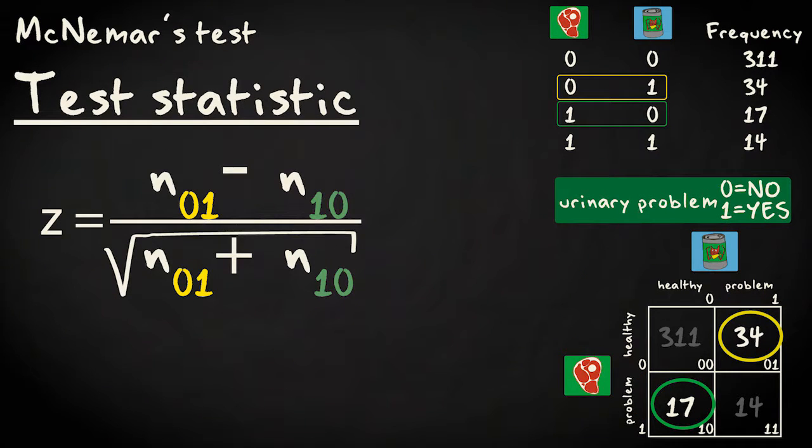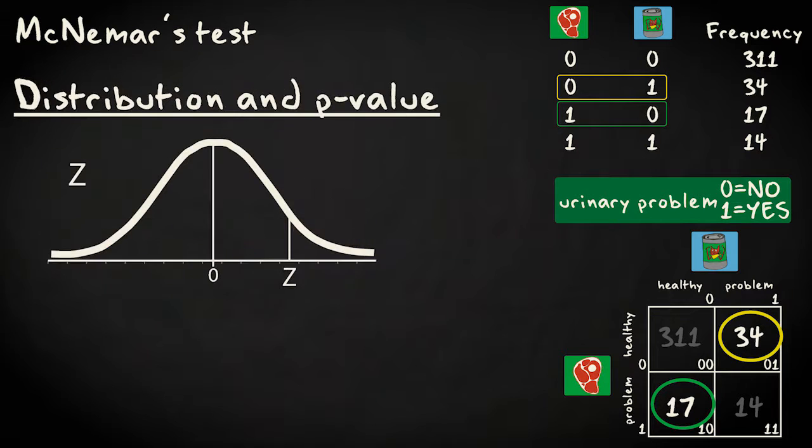The formula for the test statistic Z is very simple. It equals the difference between the two off-diagonal elements, the inconsistent cases, divided by the square root of the sum of these elements. The resulting test statistic has a standard normal distribution.